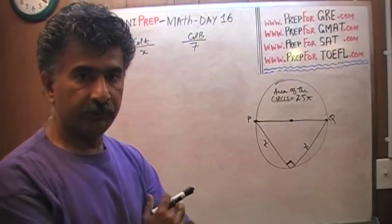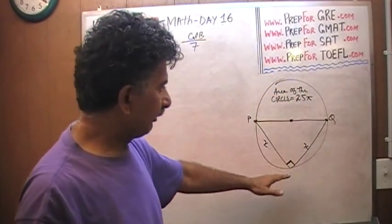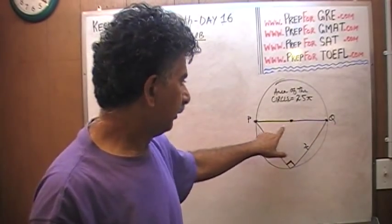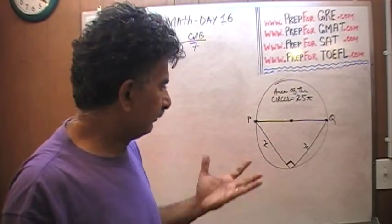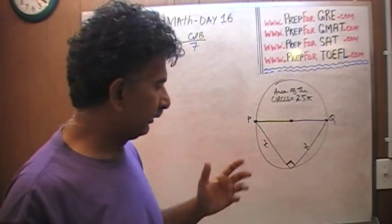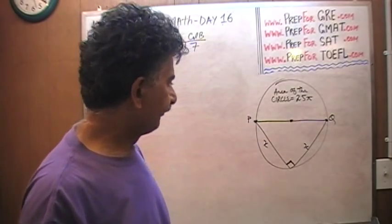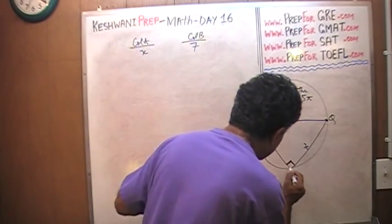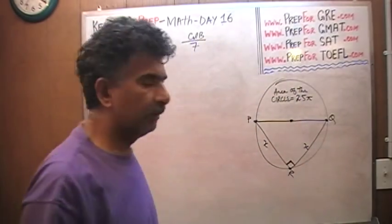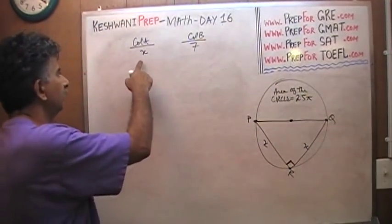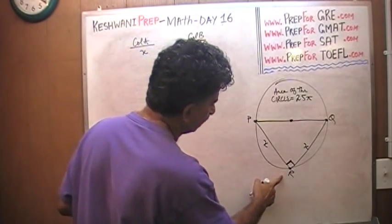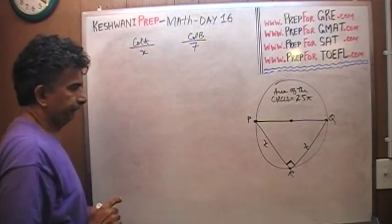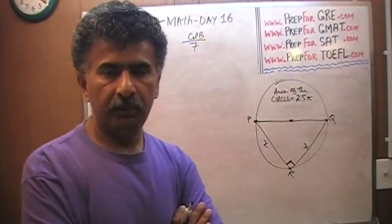Here is a simple geometry problem. We are given a circle and told that line PQ goes through the center of the circle. Because PQ goes through the center, we know it's the diameter — that's what we infer. This is a right angle triangle because of the symbol here. Triangle PQR is a right angle triangle. The question is: which quantity is bigger — x, the distance from P to R, or Q to R, which is x — or seven?